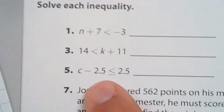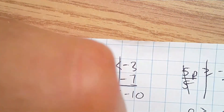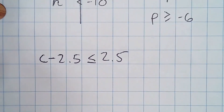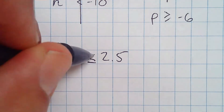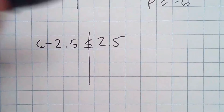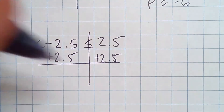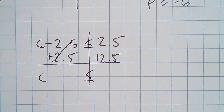Number 5 is c minus 2.5 is less than or equal to 2.5. You have to do the inverse operations as usual — you would add 2.5 to both sides. These cancel, and c is less than or equal to 5.